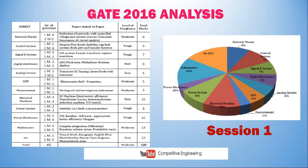If you score well in Mathematics and General Aptitude, you will get a very good rank. The Mathematics topics include complex integration, differential equations, infinite series, and probability basics. General Aptitude topics — which are similar across all GATE examinations — include time and work, paragraph, English fill in the blank, number theory, Venn diagram, and area. Study these word by word from your textbook, focusing on concepts and equations.